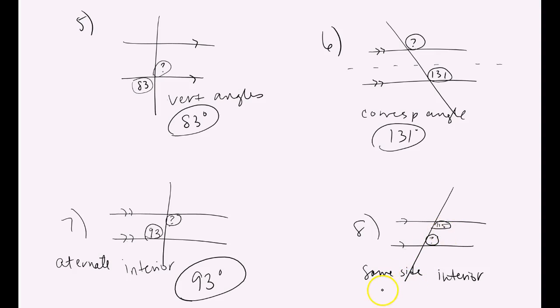So 115 plus whatever the question mark is, is supposed to be 180. So now you just get to figure out what that angle is. So not a big deal. So what is that? 25, 35, 45, 55, 65, 75. I'm getting 65 degrees for the missing question mark, and I think that does add up to 180.